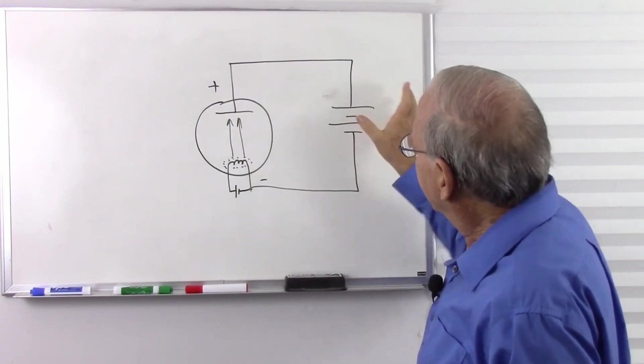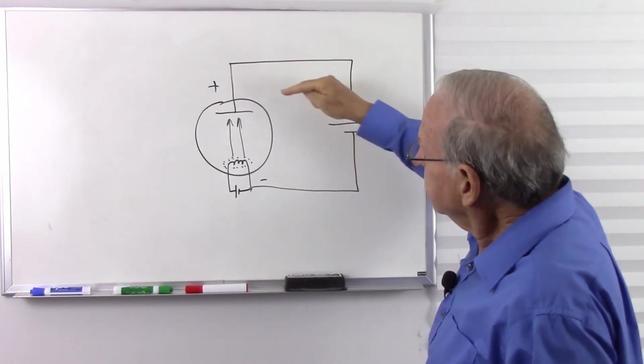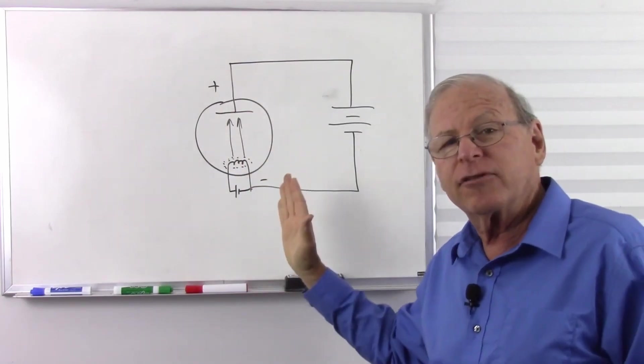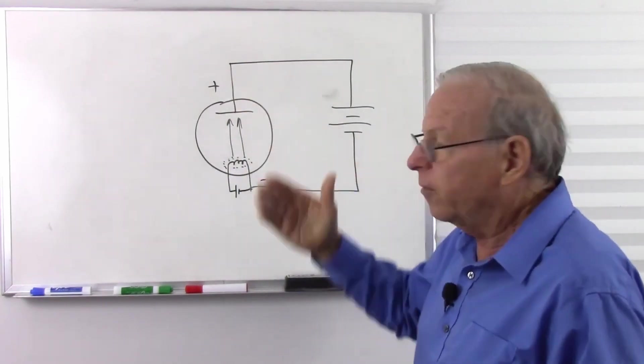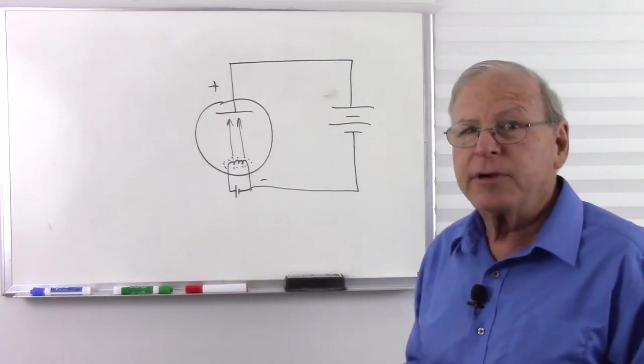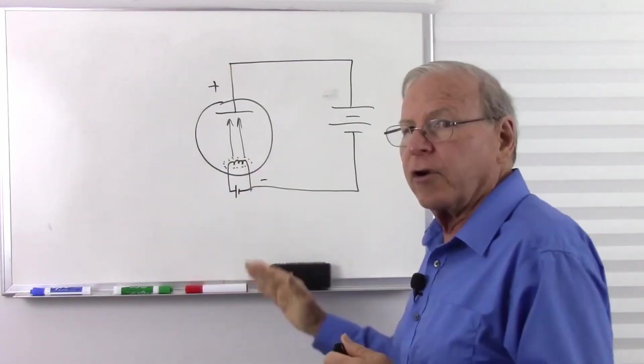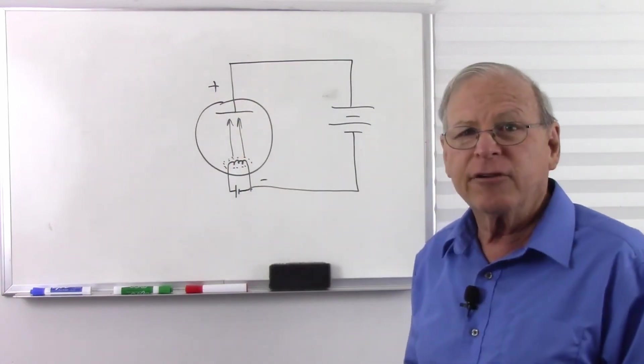And so if we reverse this battery, the negative voltage here is going to repel the electrons away. So the electrons can only flow one direction. So we have a vacuum tube diode here. It's a check valve, just like the solid state diode, where current can only flow in one direction. It cannot flow the opposite direction.